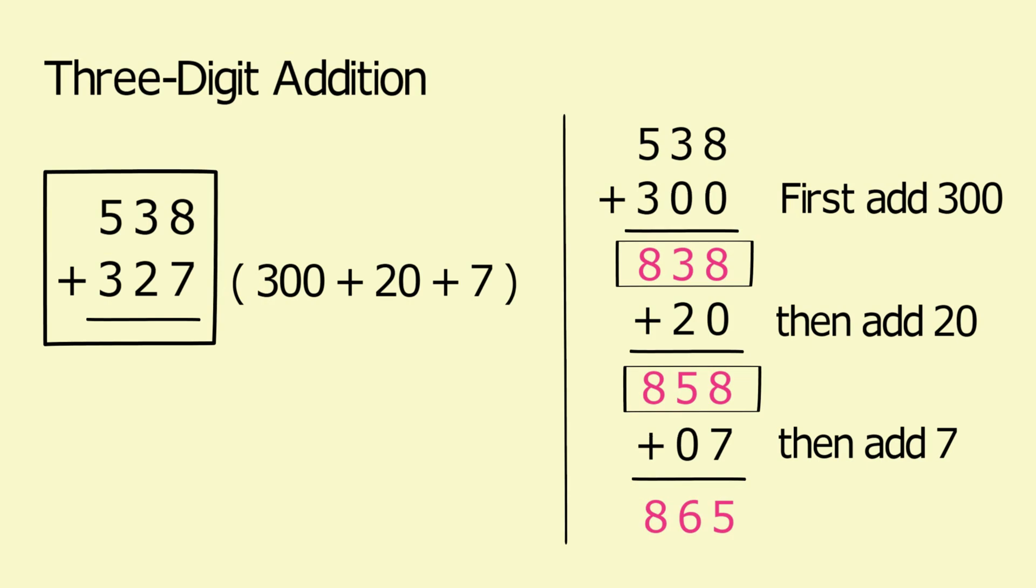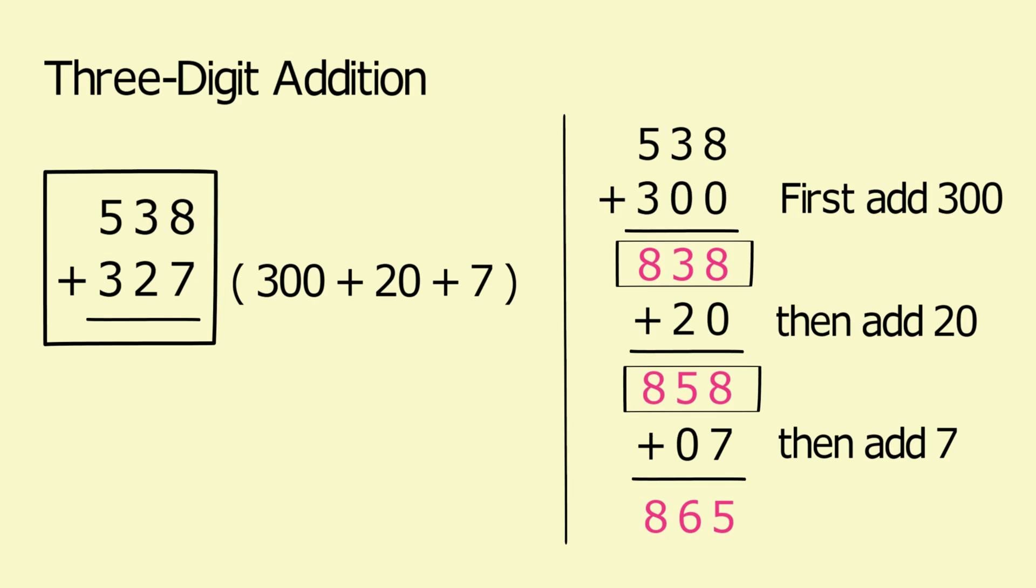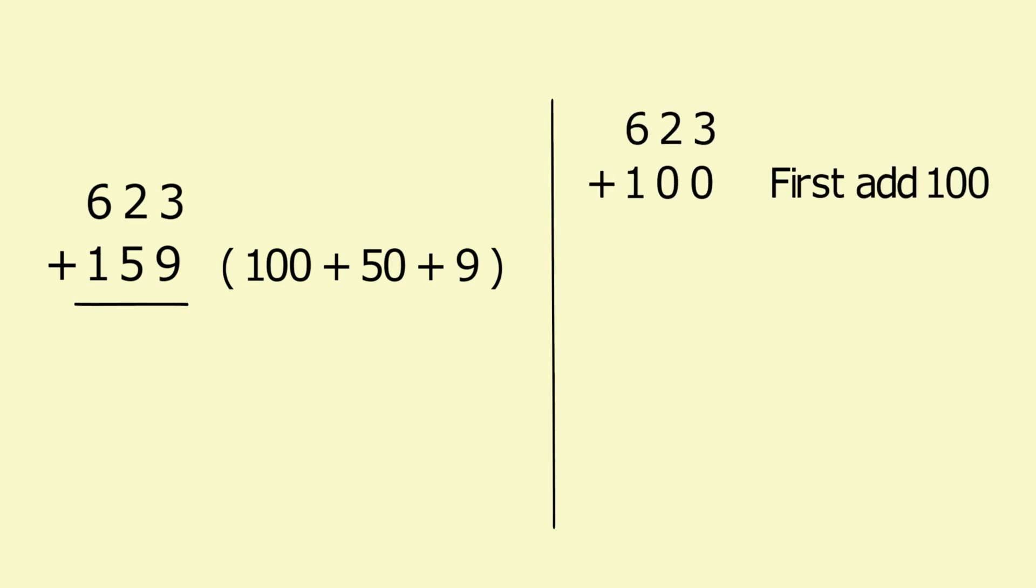Try the following additional problem in your mind before looking to see how we did it. 623 plus 159. We can write 159 as 100 plus 50 plus 9. Did you reduce and simplify the problem by adding left to right? After adding the 100s, that is 623 plus 100, gave us 723. Next you should have added the 10s, that is 723 plus 50 which is equal to 773. Simplifying the problem to 773 plus 9, which you then sum to get 782.